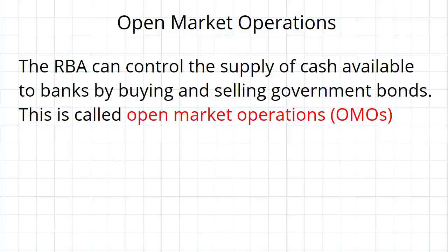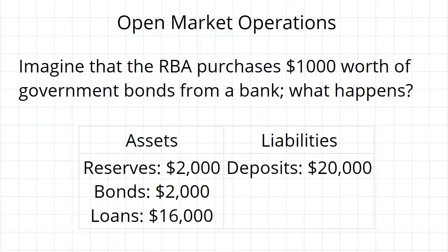Now how does that work? Imagine that you've got some bank that has these assets and liabilities: they've got $2,000 in reserves, $16,000 in loans, and they're holding $2,000 in government bonds.